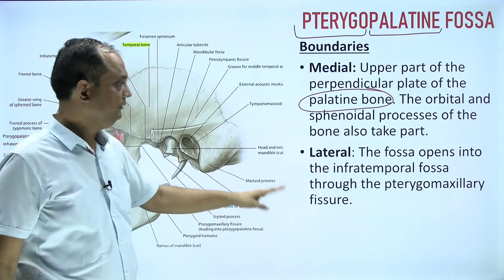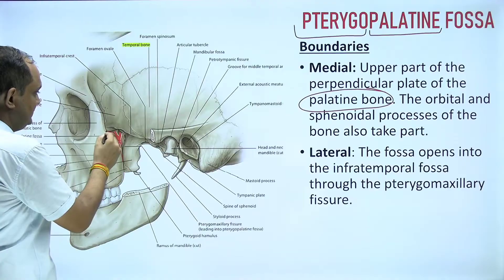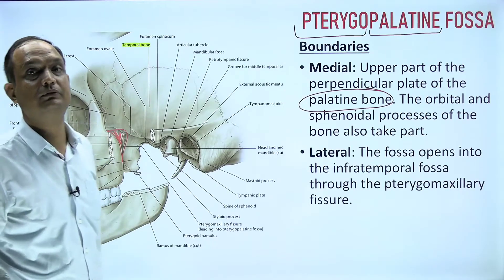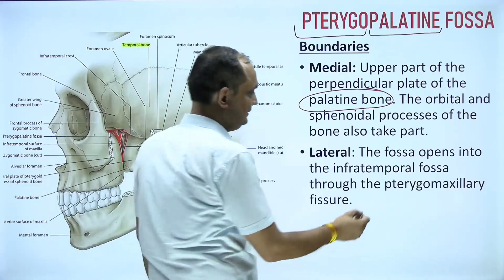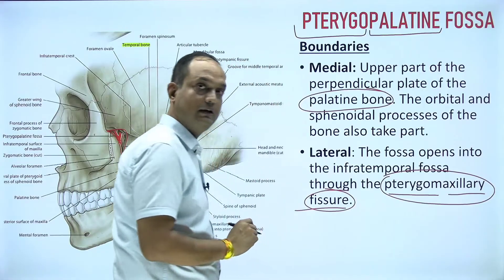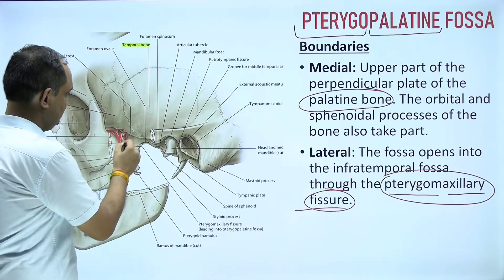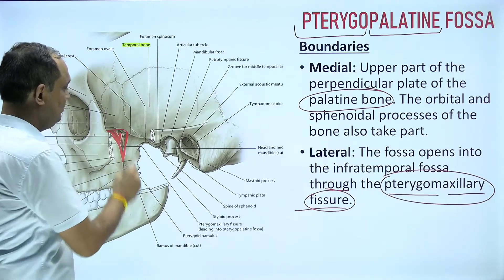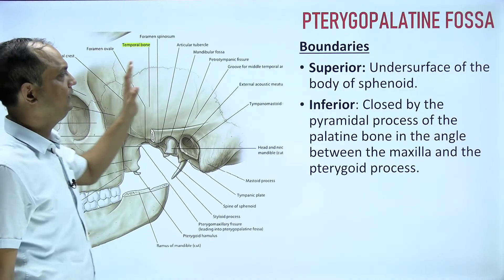On the lateral side, the lateral margin communicates the pterygopalatine fossa with the infratemporal fossa. That gateway is known as the pterygomaxillary fissure — 'pterygo' refers to the pterygoid process and 'maxillary' refers to the maxilla.